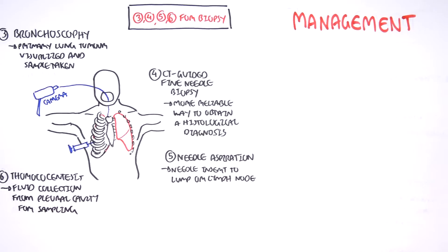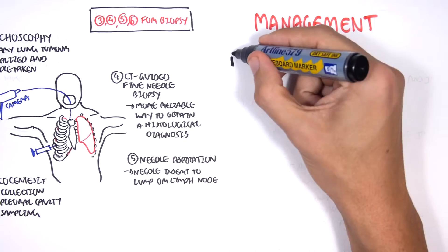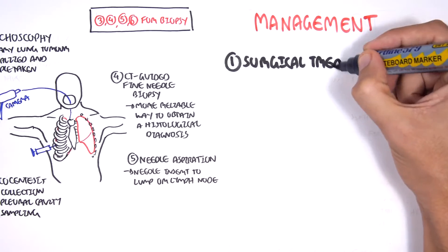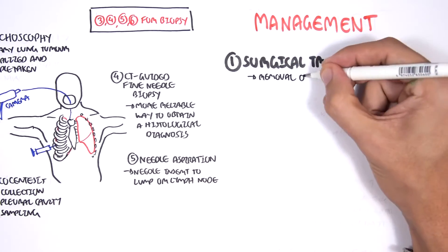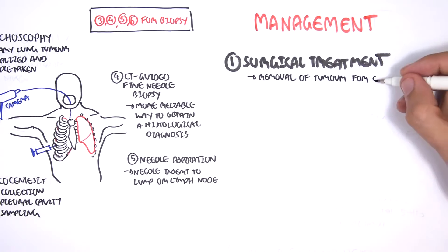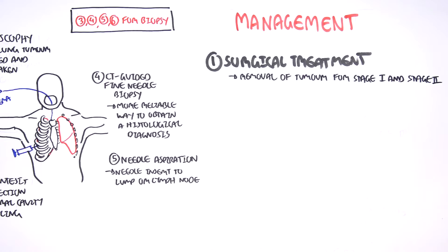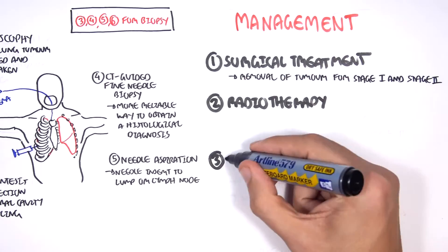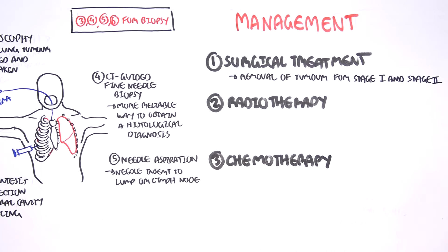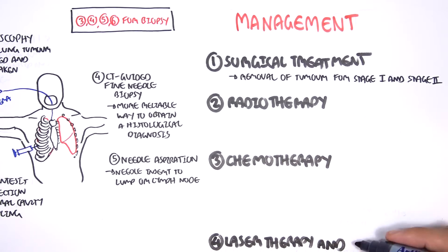And so, management is the next topic we will talk about. These are, one, surgical treatment, which is the most important. Surgical treatment is for the removal of tumor, of the lung tumor, cancer, for stages one and stages two. After surgery, or if surgery cannot be performed, there is also radiotherapy and chemotherapy, as well as laser therapy and stenting.